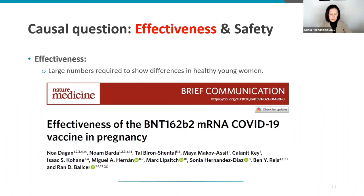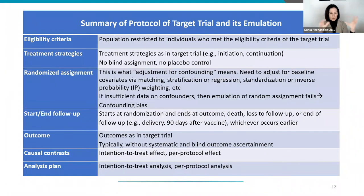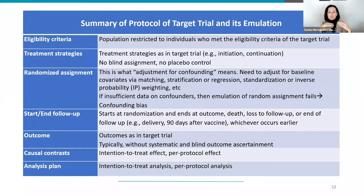The first countries to have observational data were those that vaccinated early and had systems in place to collect healthcare data. Israel was one of those countries — you have seen papers on the evaluation of the Pfizer vaccine in the general population from Israel. We contacted them, since they had published in the general population, and convinced them to do the same thing in pregnancy. Noah Dagan and Noam Barda conducted all the analysis, and we followed the protocol of an ideal randomized trial.